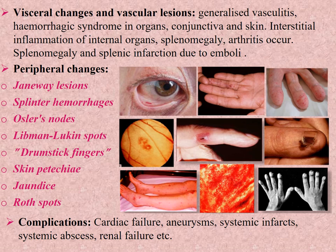Peripheral changes include: Janeway lesions — flat, painless, transient, non-tender, macular red-blue-purple lesions on palms and soles. Splinter hemorrhages — small dark lines under the fingernails. Osler's nodes — red, painful, tender intradermal lesions found on finger pulps and hypothenar eminences. Libman-Sacks spots — conjunctival splinter or petechial hemorrhage at the level of the lower eyelid. Roth spots — boat-shaped hemorrhage with pale center in the retina. Drumstick or clubbed fingers occur in long-standing disease due to hypoxia. Embolic or vasculitic skin petechiae and jaundice.